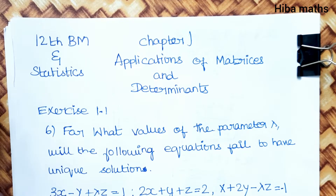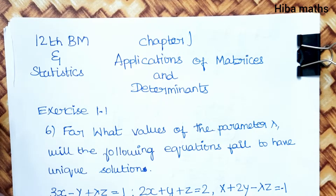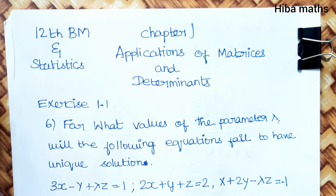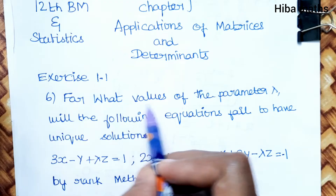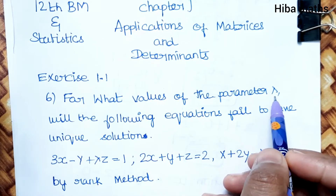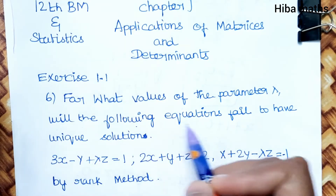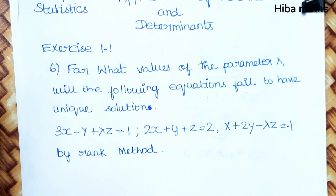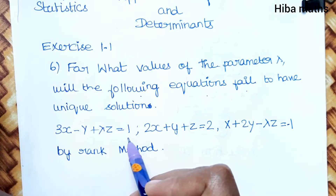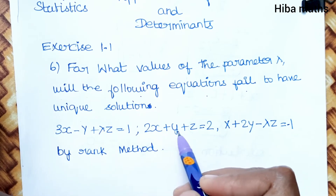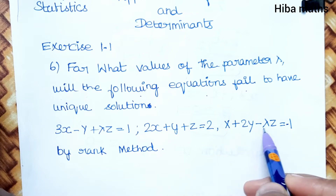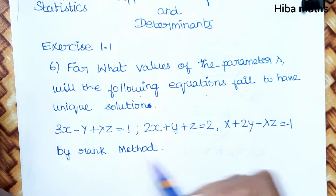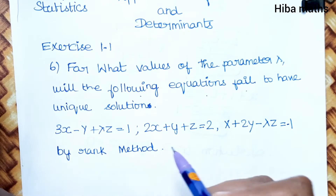Hello students, welcome to Hibamax 12th Standard Business Maths and Statistics, Chapter 1: Application of Matrices and Determinants. Exercise 1.1, 6th question: For what values of the parameter lambda will the following equations fail to have a unique solution? The equations are: 3x minus y plus lambda z equals 1, 2x plus y plus z equals 2, x plus 2y minus lambda z equals minus 1. By rank method.